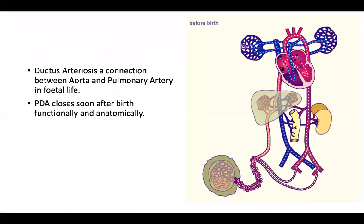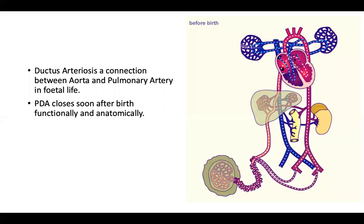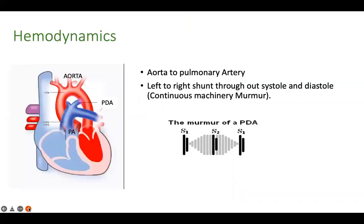What exactly is patent ductus arteriosus? Ductus arteriosus is a connection between the aorta and the pulmonary artery in fetal life, because that is how the blood coming from the mother to the baby reaches through the ductus arteriosus to the systemic circulation. But as soon as the baby is born, takes a breath, and oxygen enters the lung, the pulmonary pressures come down and the oxygen causes a functional closure of the ductus arteriosus, soon followed by an anatomical closure. But in some patients, the PDA may not close — it may remain open, and that is what is known as patent ductus arteriosus.